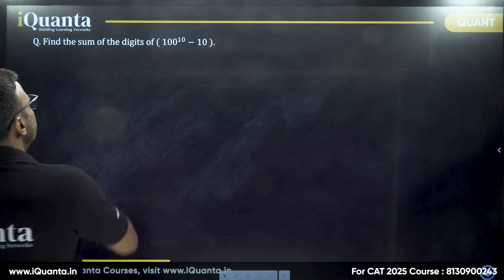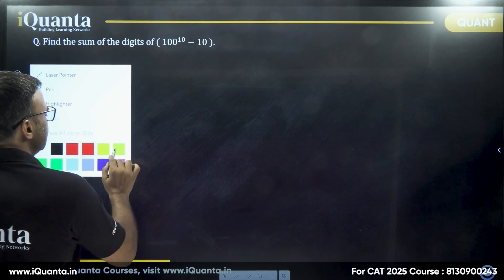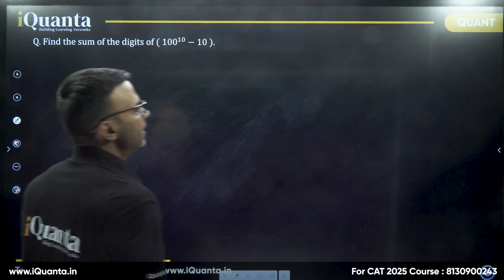This question says, find the sum of digits of 100 to the power 10 minus 10. Very simple question. Let's see.